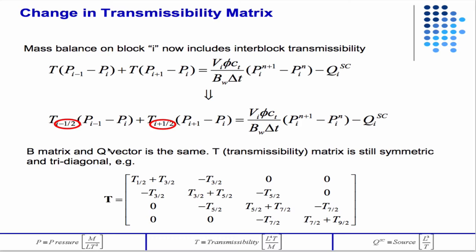Again, now we have these interblock transmissibilities. They plug right into the equation that we derived when we did it from this so-called control volume form. And then we get, when you assemble them, so this would be for a four-grid block system. When you assemble them, you get this total transmissibility matrix.